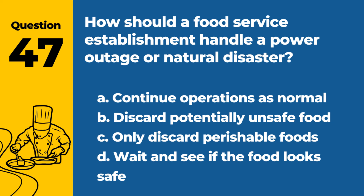Question 47. How should a food service establishment handle a power outage or natural disaster? a. Continue operations as normal. b. Discard potentially unsafe food. c. Only discard perishable foods. d. Wait and see if the food looks safe. Answer: b. Discard potentially unsafe food. Safety is the priority, and potentially unsafe food should be discarded following a power outage or natural disaster.